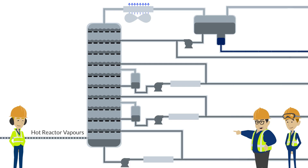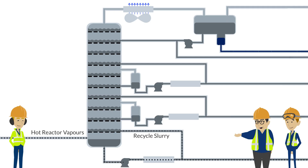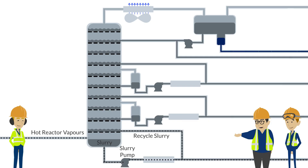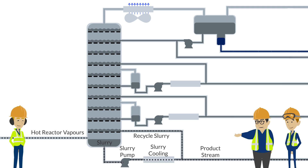The hot product stream from the reactor enters the fractionator tower at around 500 degrees Celsius and begins cooling by mixing with the slurry from the slurry recirculation line. Slurry drops out in the bottom of the tower and is pumped out, cooled, and some of it is sent out as a heavy fuel oil product while the rest is recirculated back into the tower to cool the incoming vapor.